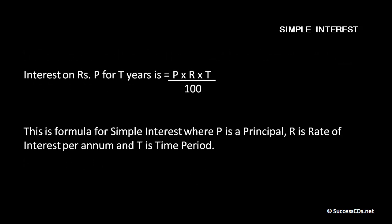This is my formula for simple interest. Now I have my principal P. So interest on rupees P, that was my principal, for T years, the time period for which I borrowed the amount is equal to P into R into T upon 100. This is my formula for simple interest, where P is my principal borrowed, R is the rate of interest per annum and T is time period.